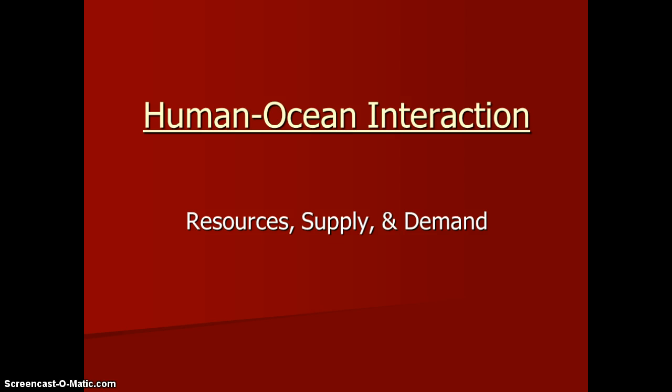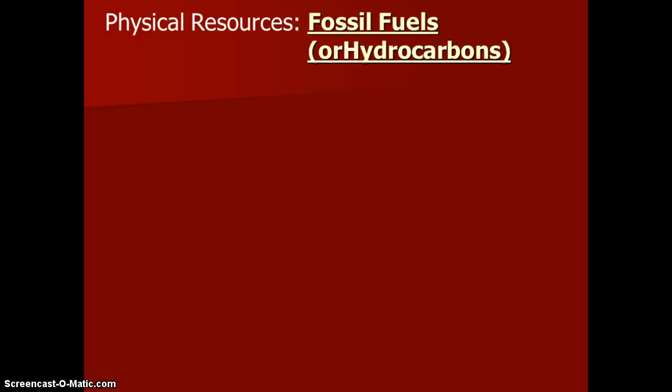This lesson is essentially about the physical resources we harvest from the ocean. First and foremost, fossil fuels — also known as hydrocarbons — are one of the biggest resources we get from the ocean. It's considered a physical resource because it's something formed or deposited in the ocean that we physically remove. Calling it an energy resource would be a misnomer; we don't directly take energy — we take the resource and burn it to get the energy.